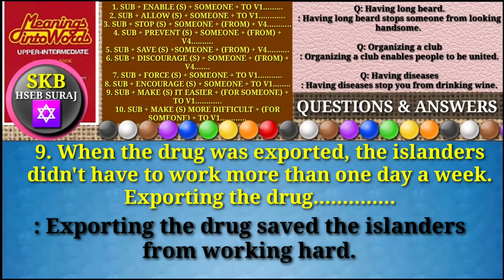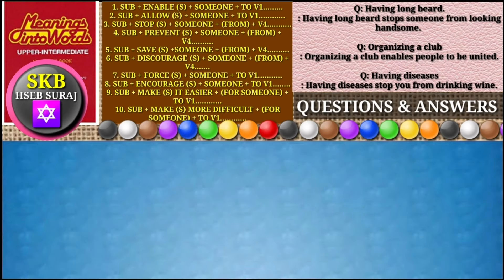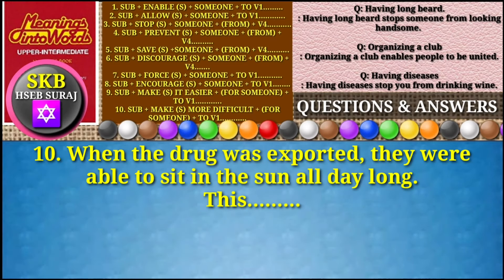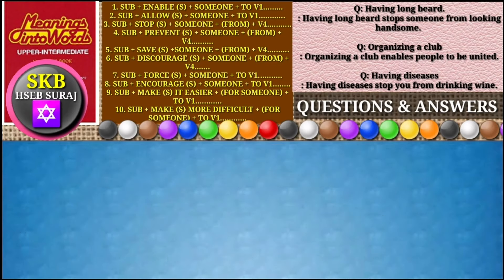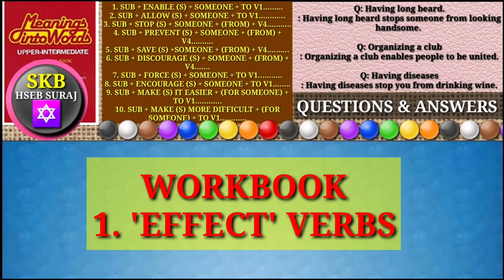Question number nine: 'When the drug was exported, the islanders didn't have to walk more than one day a week.' Start your answer with 'Exporting the drug.' Question number ten: 'When the drug was exported, they were able to sit in the sun all day long.'